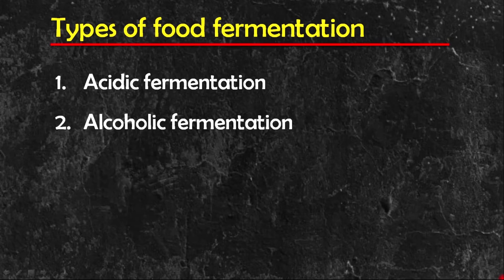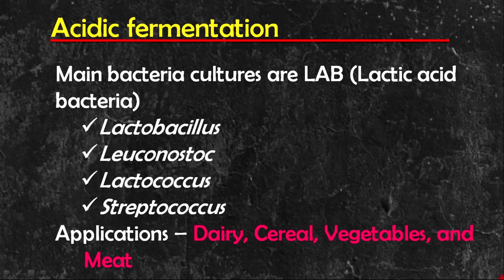Food fermentation can be generally classified into acidic fermentation on one hand and alcoholic fermentation on the other. The main phylum of bacteria involved in acidic fermentation is Firmicutes, which contains the lactic acid bacteria — with Lactobacillus, Leuconostoc, Lactococcus, and Streptococcus being the most common starter cultures.